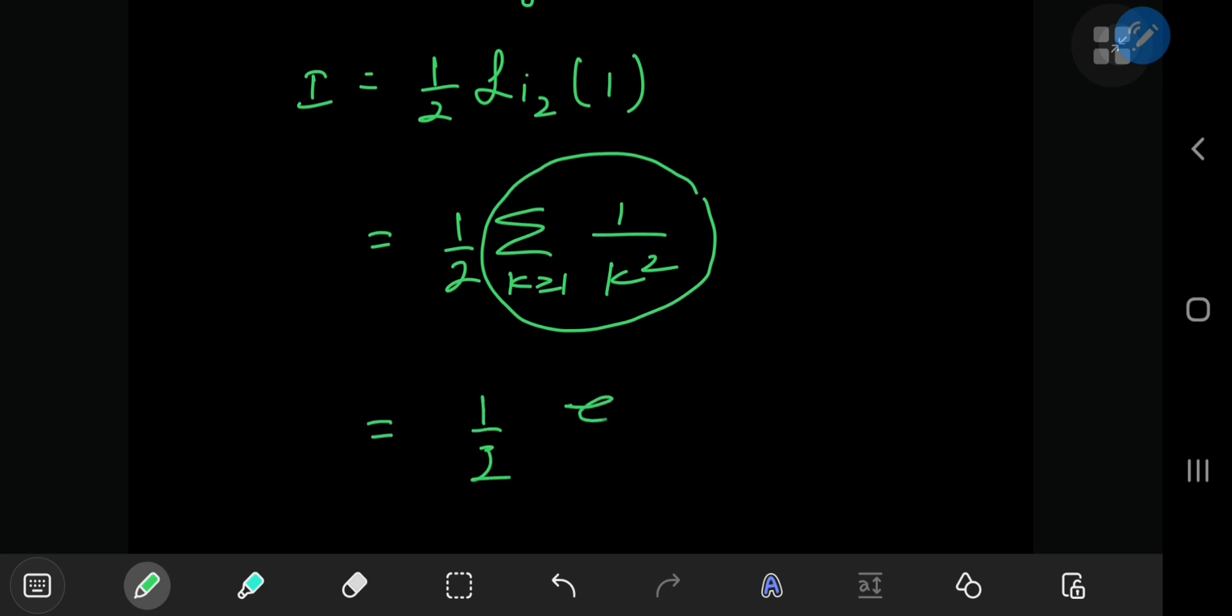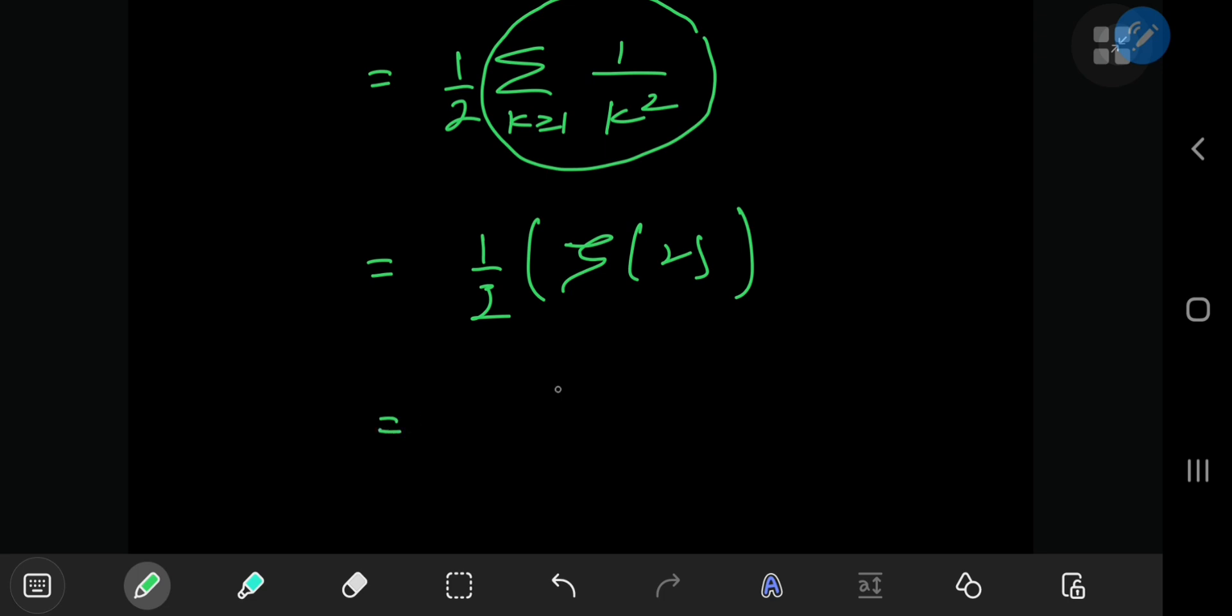evaluated at 2, and that's a horrible zeta function notation over there, sorry about that. And this evaluates to pi squared by 6, link in the description below.